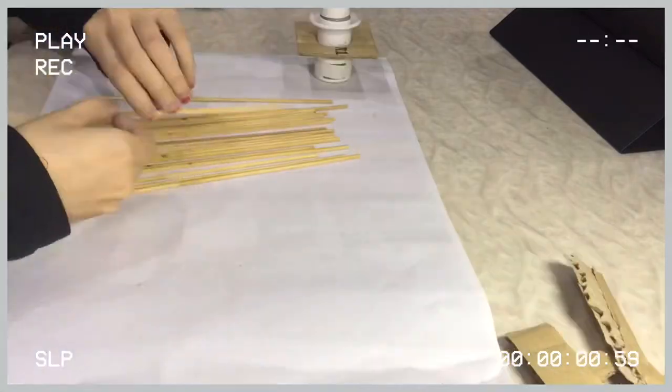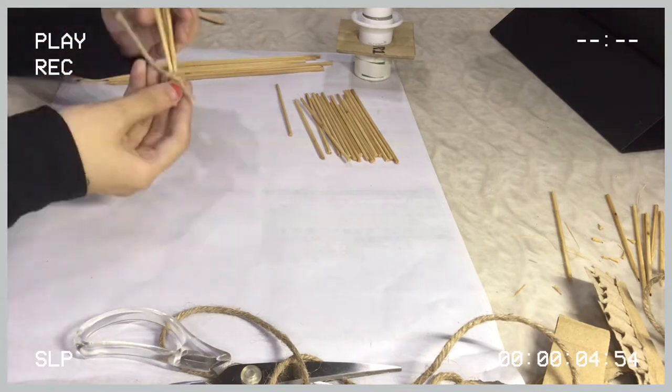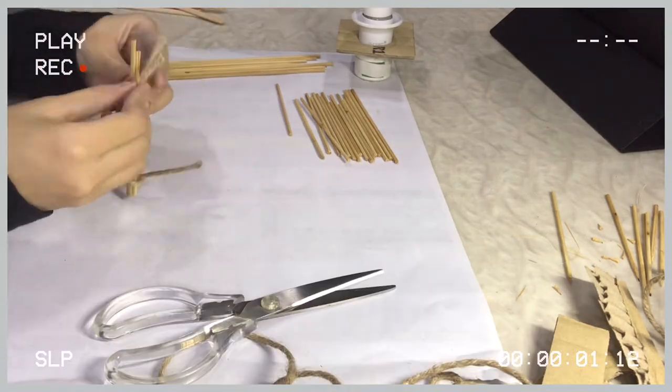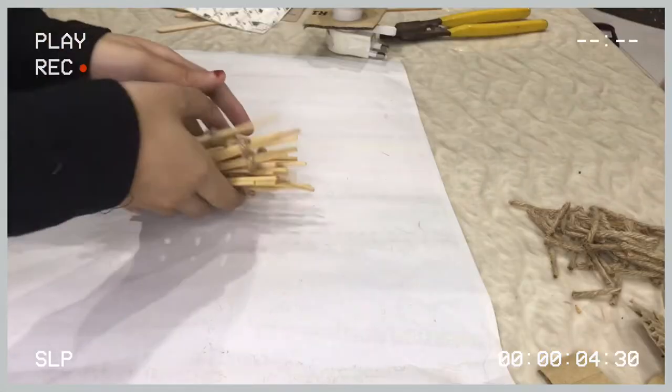Okay, so the next step is using the satay sticks. I cut them off into different lengths using the wire cutter and then tying them up in a bundle of 3 using twine rope and repeating the same process until I have all 16 of them.